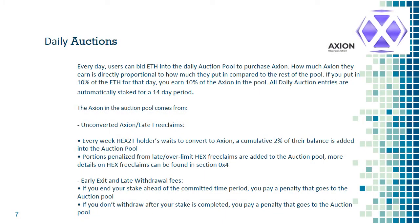The daily auction: putting tokens and value into your pocket. To get AXN, it needs to be claimed by $2T holders. The longer they wait to claim, the more penalties they face — about 2% of their total per week. This 2% is added into a daily auction pool where people can bid using ETH on the AXN tokens within it.